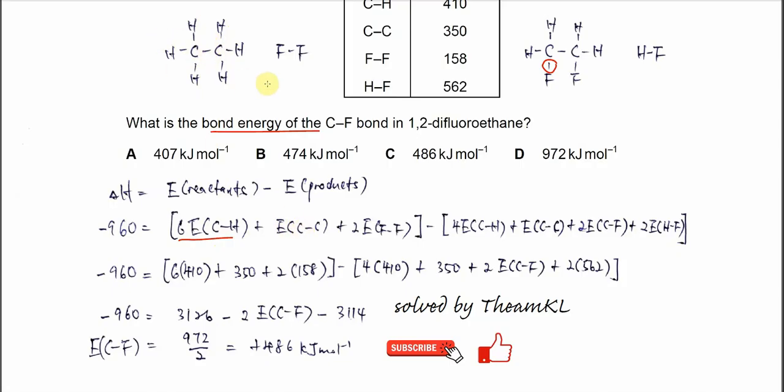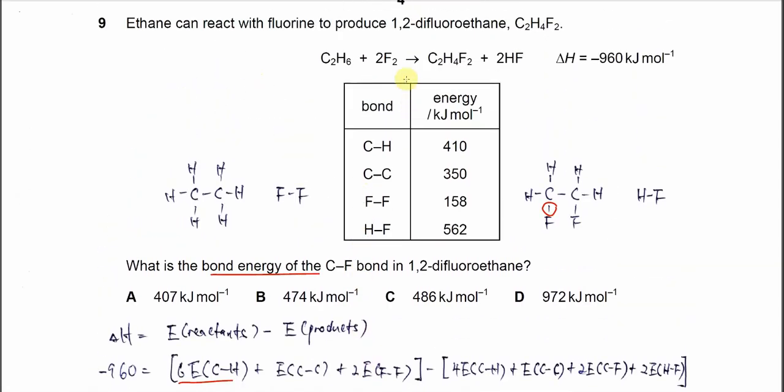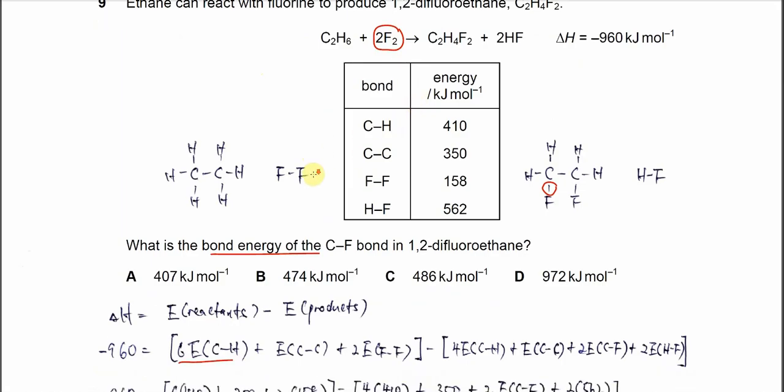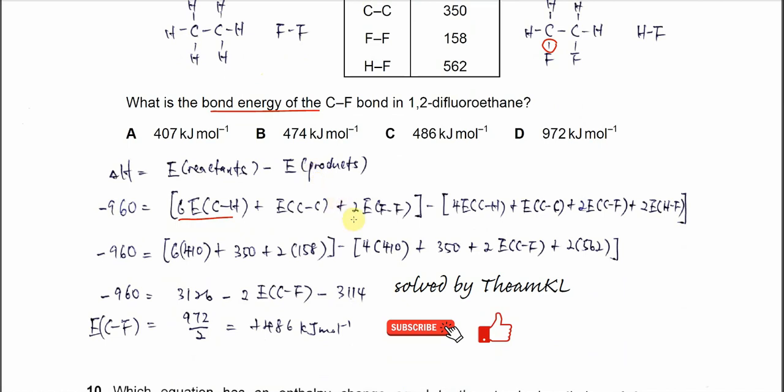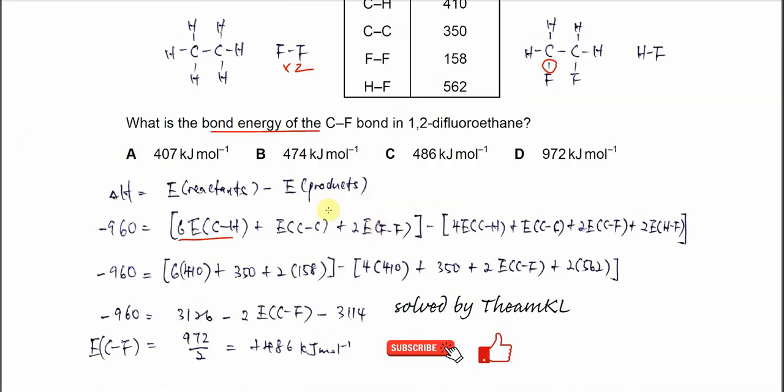And of course, plus two moles because in this equation there are two moles of fluorine. So it's two times the bond energy of fluorine. This is the reactant part.